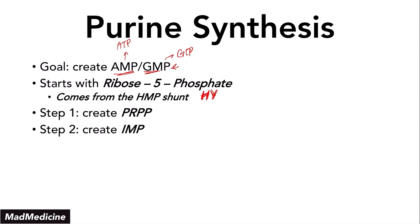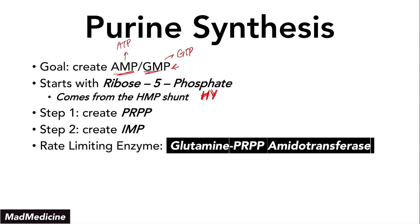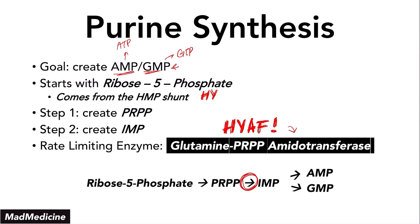The rate-limiting enzyme in this whole process is glutamine PRPP amidotransferase. This is very high yield — commit this to memory. This enzyme plays a role in converting PRPP into IMP. The name kind of gives it away.